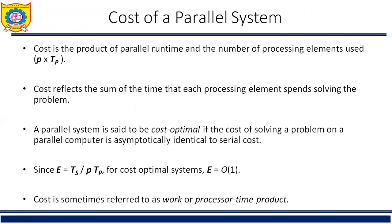Now, the cost of the parallel system. We define the cost of solving a problem on a parallel system as the product of parallel run time and the number of processing elements used: cost = P × TP. Cost reflects the sum of the time that each processing element spends solving the problem. Efficiency can also be expressed as the ratio of the execution time of the fastest known sequential algorithm to the cost of solving the same problem on P processing elements.